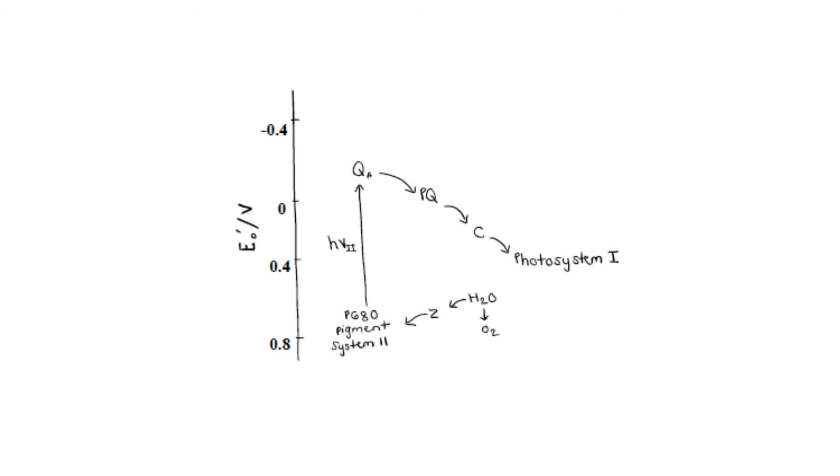The electrons then flow through QA, PQ, and Cyt, which are all part of the electron transport chain. Finally, the electrons go to Photosystem I and the process of photosynthesis continues.